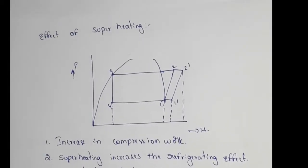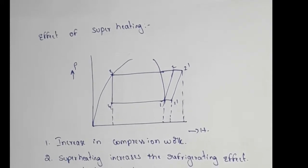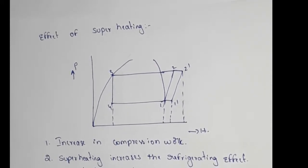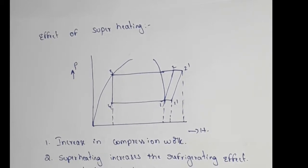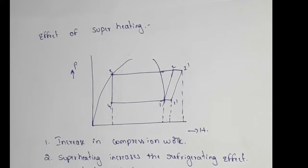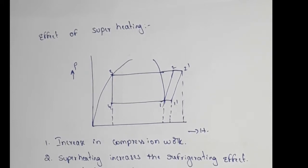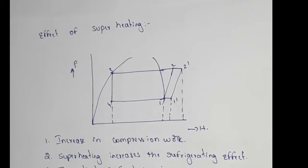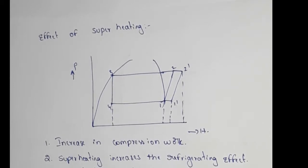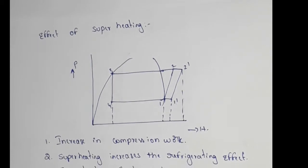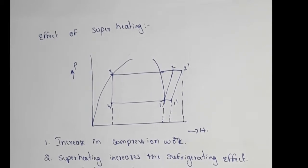My next topic is the effect of superheating. The liquid refrigerant passes through the evaporator and absorbs latent heat, getting converted into vapor. Before it leaves the evaporator, the refrigerant continues to absorb latent heat and then sensible heat from the refrigerated space, getting superheated.